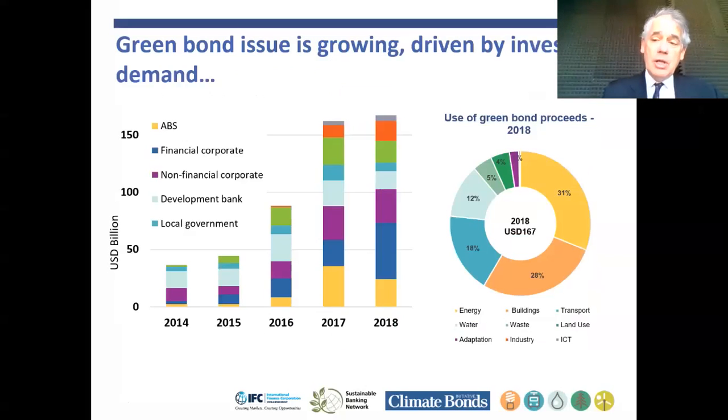The market started with bonds allocated to renewable energy. We've now seen it develop into green buildings—28% of the whole market has the money allocated to energy efficient, emissions efficient buildings. Transport is now 18% of the market, a mixture of electric rail and electric vehicles. Water, Cape Town is a notable one in Africa, and various other sectors.